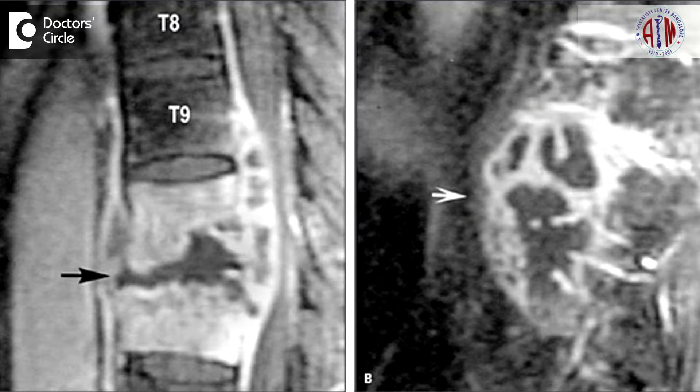First, we have to assess the symptoms and signs of the patient, then investigate. Investigation goes like this: X-ray first, then we may also need higher investigations like CT scan, MRI scan. Sometimes we also need an abdominal ultrasound to rule out other causes for tuberculosis.